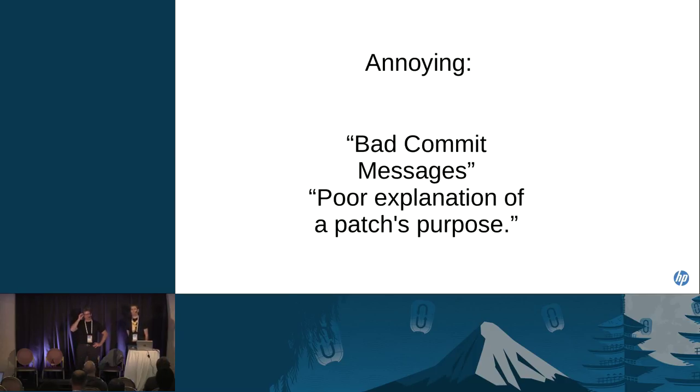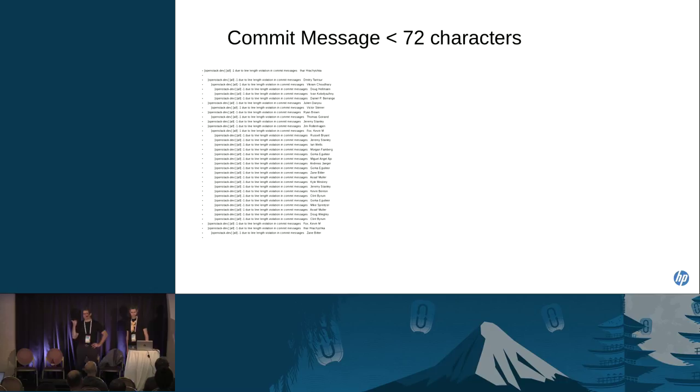So we saw this over and over again in the survey. Bad commit messages or commit messages that don't do a very good job of explaining the patch's purpose. It's the first thing people see when they're reviewing. For me, it's the last thing I write when I'm submitting a patch. So there's a little disconnect there because I don't put the effort into the commit message that I'm putting into the code, which I've learned to stop that practice.